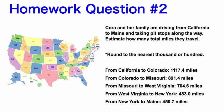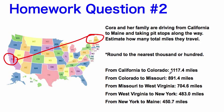Homework question number two. Cora and her family are driving from California to Maine and taking pit stops along the way. Estimate how many total miles they travel by rounding to the nearest thousand or hundred. From California to Colorado, take 1,117.4 miles and round to the nearest thousand — that gives about 1,000 miles. Now figure out and round to the hundreds for the rest of the states, then add them together.